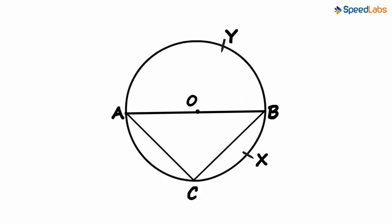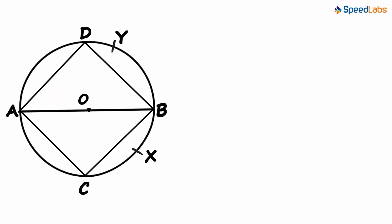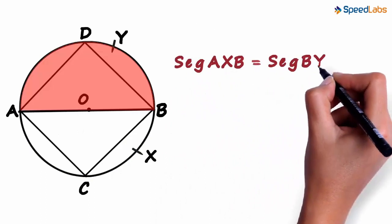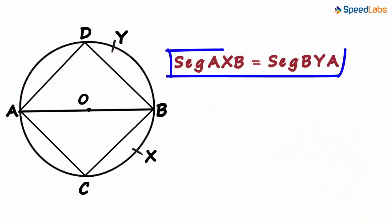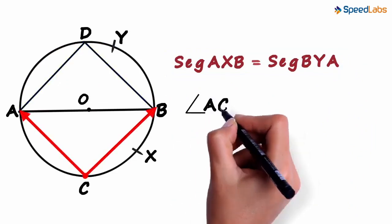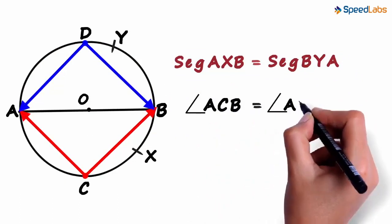Angle ACB is the angle of segment AXB and angle ADB is the angle of segment BYA. Since the chord passes through the center, we can say that segment AXB will be equal to segment BYA. Because the segments are equal, the measure of the angles formed by them will also be equal. Which is why angle ACB will equal angle ADB.